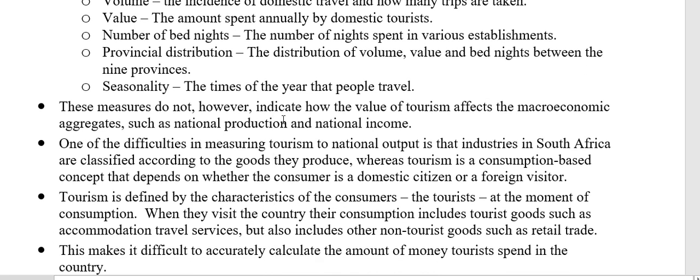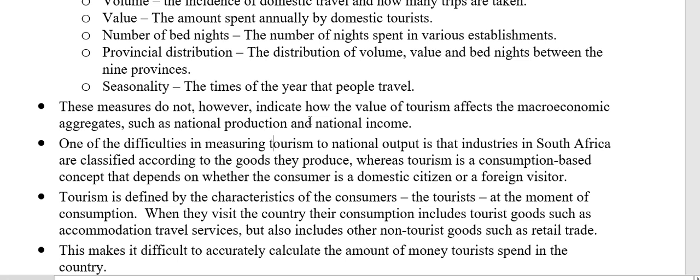None of those indicators actually show how tourism affects national production and national income, because for national production we need the finished value of all goods and services produced in the country. It is very difficult to quantify tourism in monetary terms. To be included in the GDP, industries are classified according to the goods they produce, whereas tourism is a consumption-based concept.